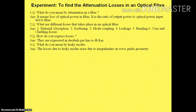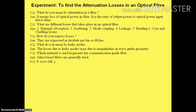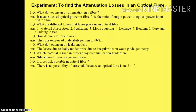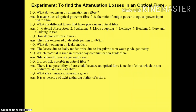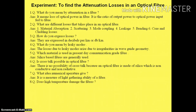What do you mean by leaky modes? The losses due to leaky modes arise due to irregularities in the waveguide geometry. Which material is used in present-day communication-grade fiber? Silica-based fibers are generally used. Is crosstalk possible in optical fiber? There is no possibility of crosstalk because an optical fiber is made of silica, which is non-conductive and non-radiative. What is numerical aperture? It is a measure of the light-gathering ability of an optical fiber.